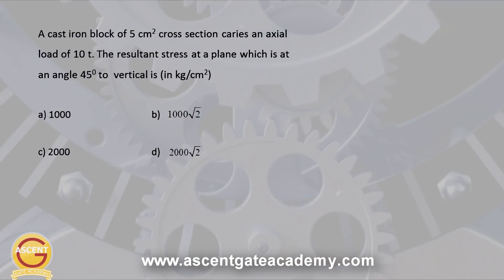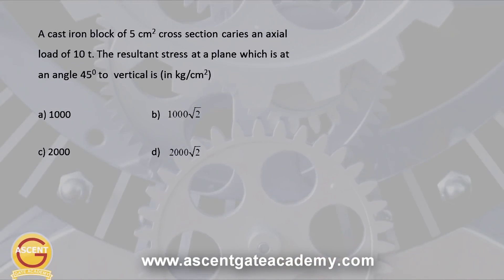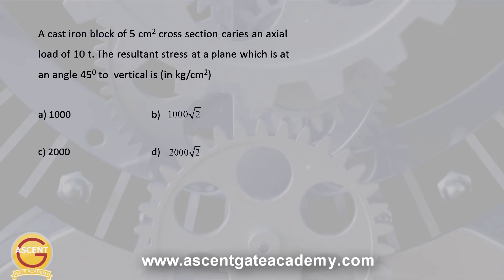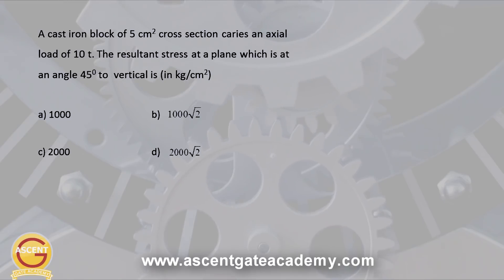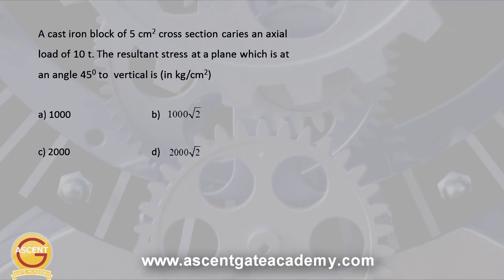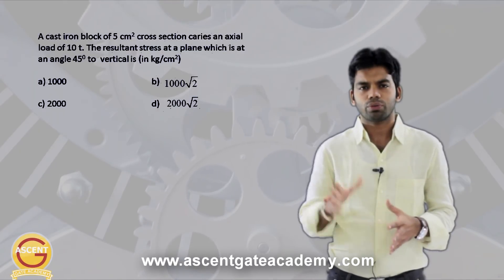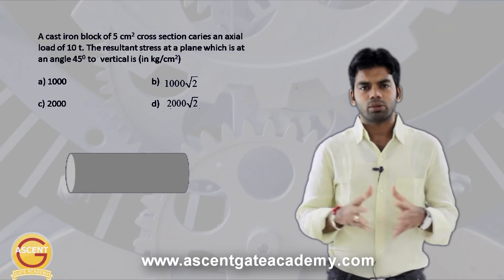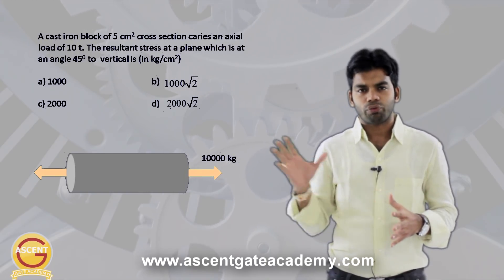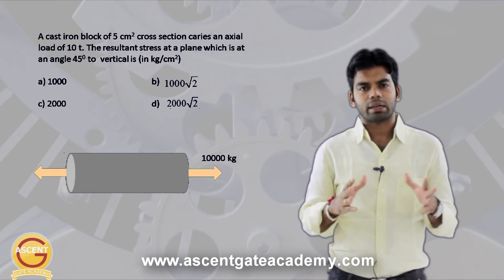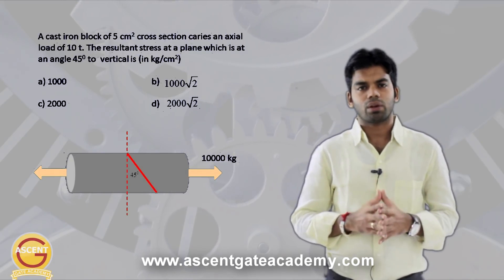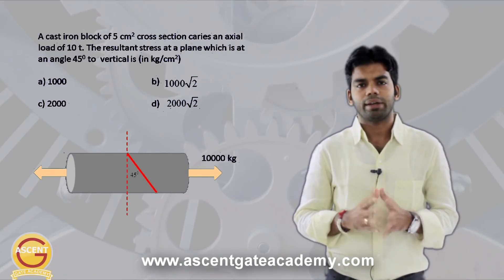The question says: a cast iron block of 5 cm square cross section carries an axial load of 10 tons. The resultant stress at a plane at an angle of 45 degrees to the vertical is to be found. So we have a cast iron block subjected to an axial load of 10 tons, and we have to determine the resultant stress at a plane inclined at 45 degrees to the vertical.